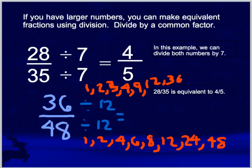Thirty-six divided by twelve is three, and forty-eight divided by twelve is four. So that's three-fourths, and that's what's called simplest form.